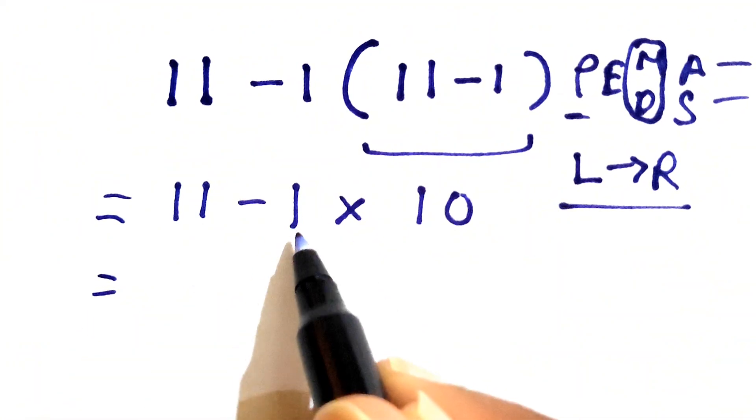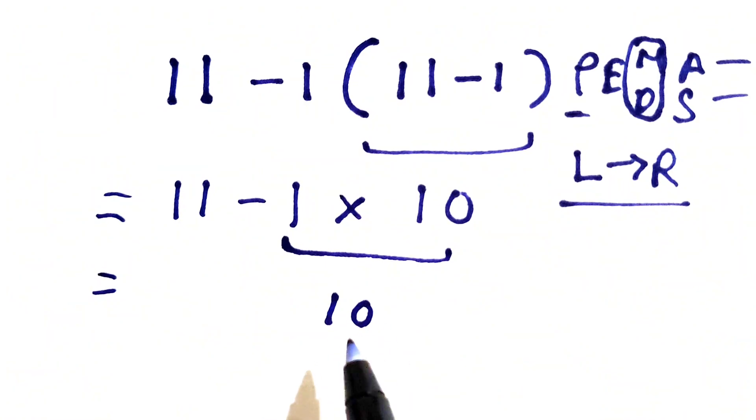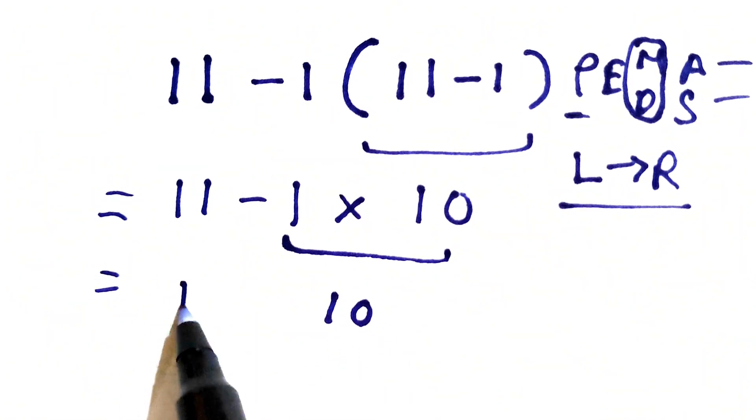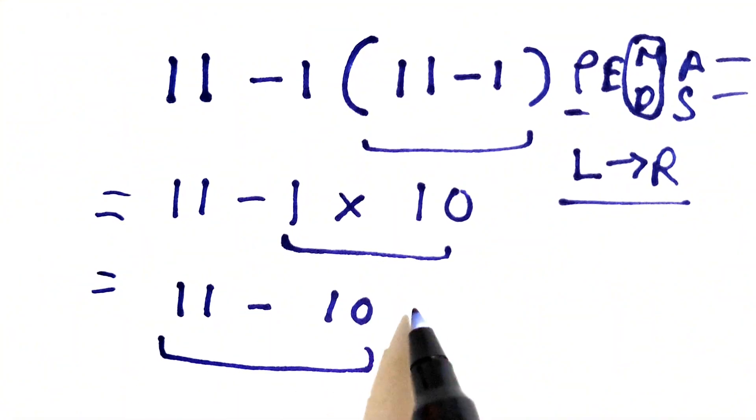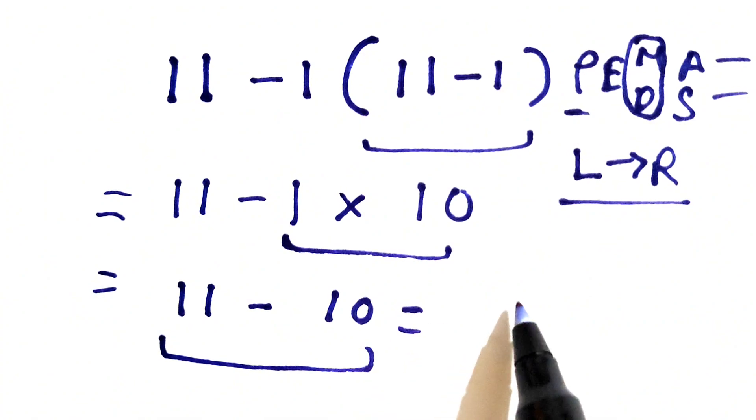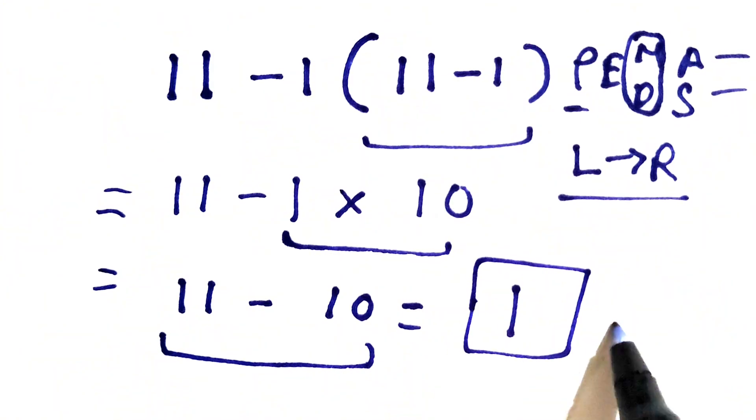So we'll solve this 1 times 10 that gives us simply 10, and now we are left with 11 minus 10. So 11 minus 10 gives us the answer as only 1. So this is the final correct answer.